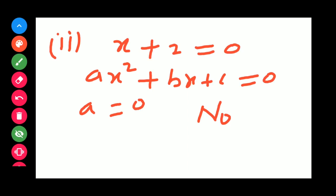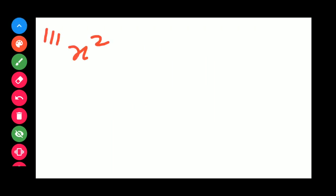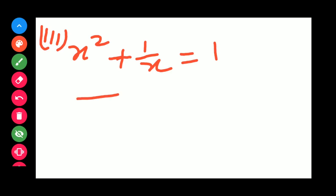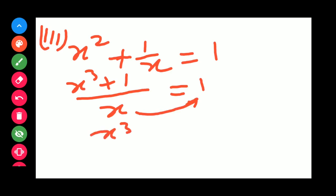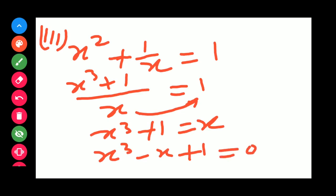The third question is x² + 1/x = 1. Taking LCM as x, we get x³ + 1 = x. Shifting to the left-hand side gives x³ - x + 1 = 0. Since there is an x³ term, it is not a quadratic equation. So the answer is no.